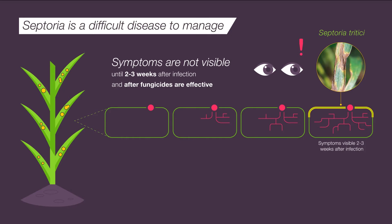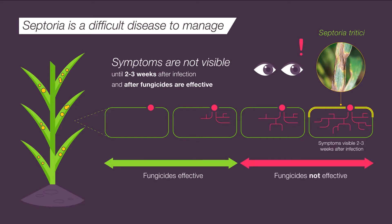The challenging part of controlling this disease is that fungicides are only effective in the early stages of this infection cycle, and different products and rates are appropriate depending on how far through this infection cycle you are.